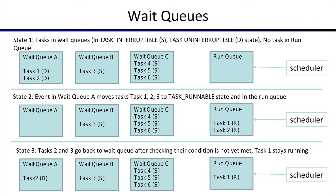In state two, both of the tasks that were waiting in queue A — they were in state D — got their IO. Let's say they were waiting on IO and got their read response back, so they have now been put back into the scheduler. The wait queue, when they get whatever they were waiting for, changes their state to task_runnable and puts them into the run queue. The scheduler then runs those tasks.